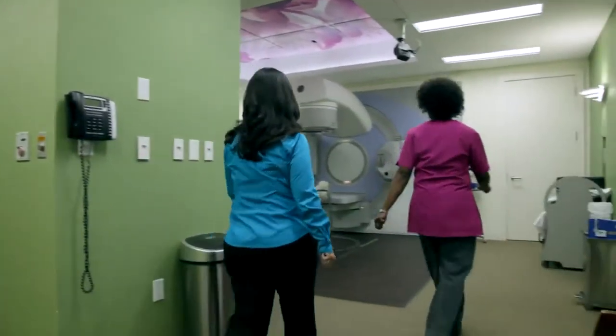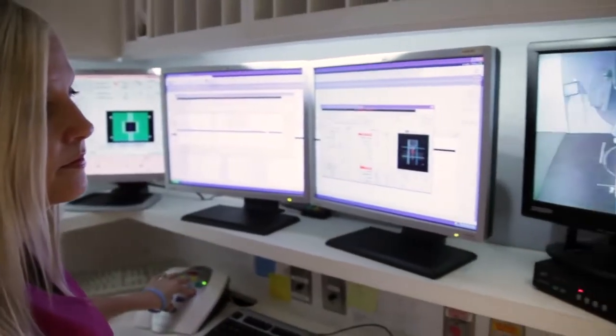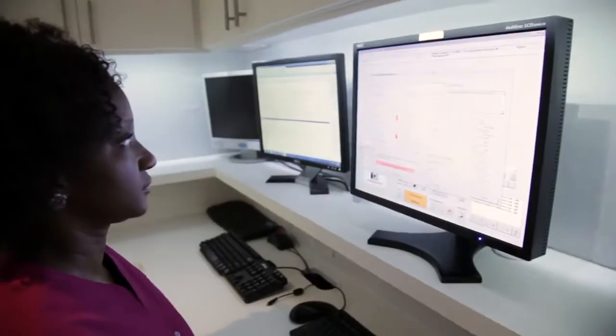During a mammosite treatment we bring you in the room, we lie you on the table, we connect the catheter, the mammosite catheter that's coming from you to the catheter that's coming out of our machine. From then we have the physicist come in and they check the setup and then we step out of the room, we can see you and hear you from outside of the room and your treatment usually takes about eight minutes.